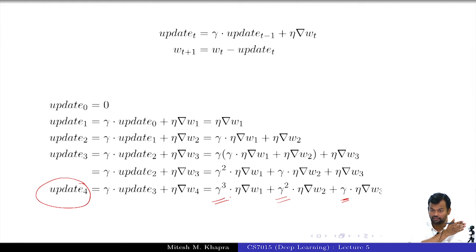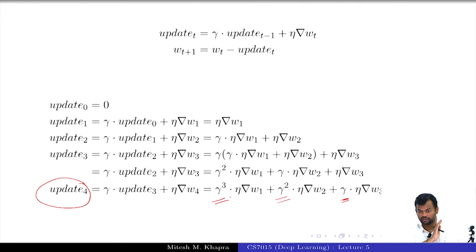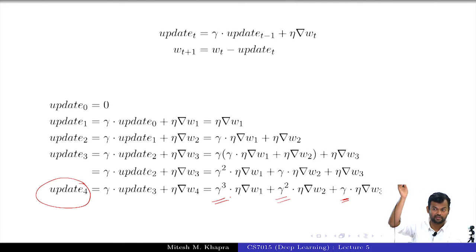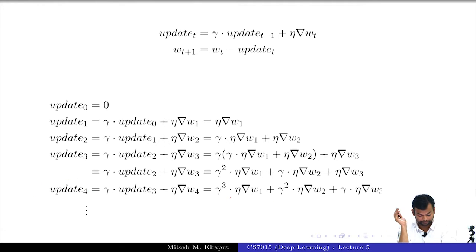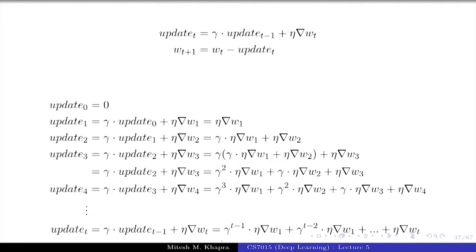As I move further and further away from the last gradient I checked, I give it lesser and lesser weight. In general, this is going to be the formula, and as t gets larger this fraction becomes smaller and smaller. So your first step will have lesser and lesser weightage as t increases.